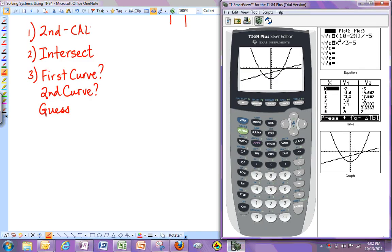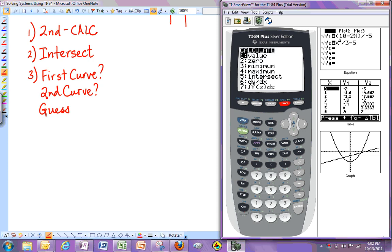So second calc menu. So the calc menu is the fourth button on the top row, but it's in blue on mine. So I have to hit the blue button first. Second calc. And then you can see intersect is the fifth feature here. So I'm either going to scroll down to five or just hit the number five. Either way it doesn't matter. So there we go. Intersect.